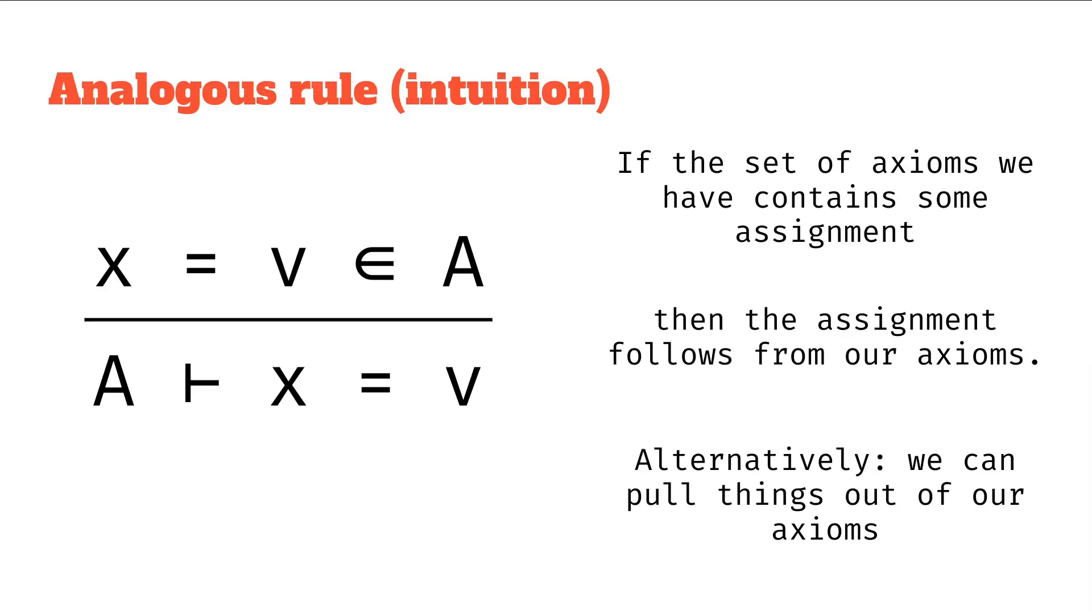So from A, it follows that x equals v. And alternatively, we can pull things out of our axioms. And by things, I mean statements that assign values to variables.